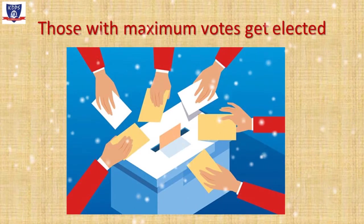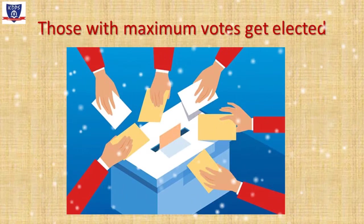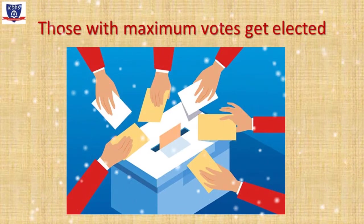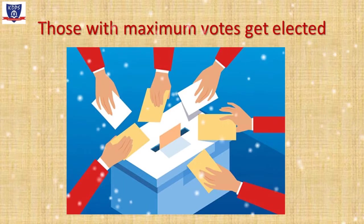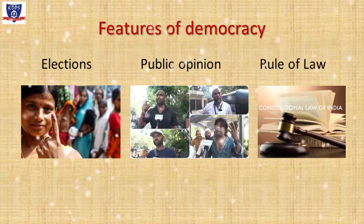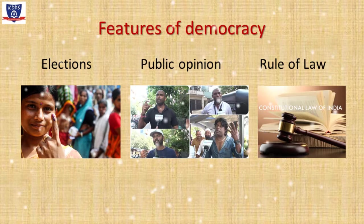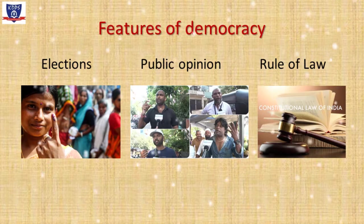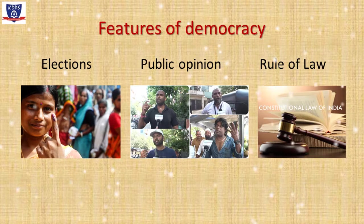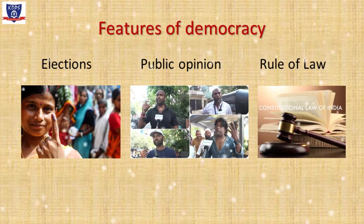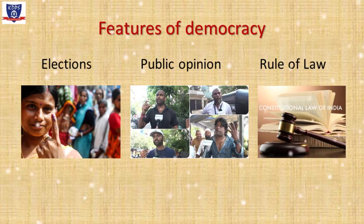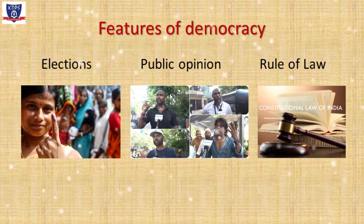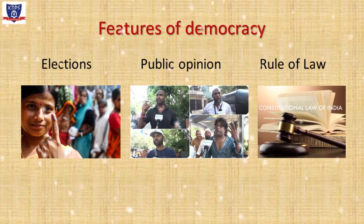If the people are not satisfied with their government, they can remove it in the next elections. The policies of the government also reflect the wishes of the people — public opinion. Hence, the three important features of democracy are: first, elections through which people cast their votes; second, public opinion through which they express their opinion through their representatives; third, rule of law which considers everyone equal before the law. The president of the country and an ordinary citizen get the same protection of the law.